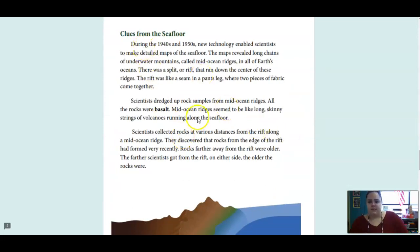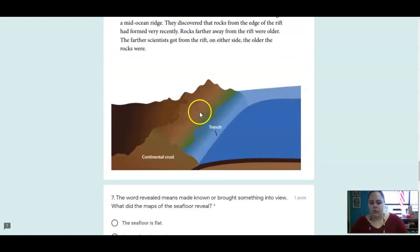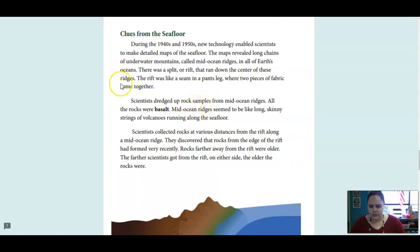Okay, clues from the seafloor. We're looking at the word revealed. So that one is right here, just this first paragraph. During the 1940s and 1950s, new technology enabled scientists to make detailed maps of the seafloor. The maps revealed long chains of underwater mountains called mid-ocean ridges. In all of Earth's oceans, there was a split or a rift that ran down the center of these ridges. The rift was like a seam in a pants leg where two pieces of fabric come together.